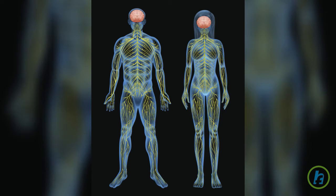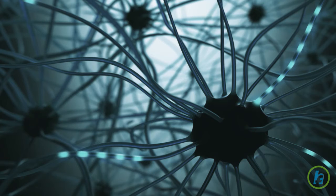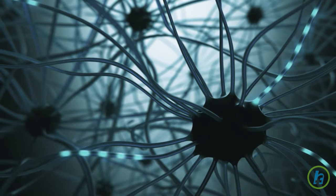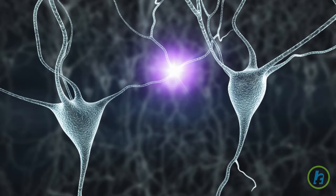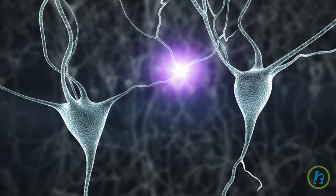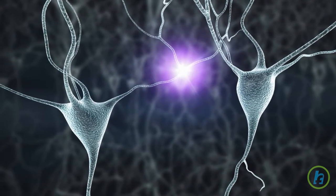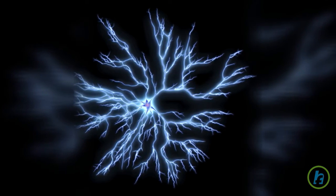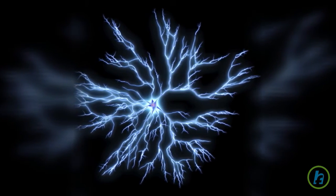The nervous system manages all of the body's actions and reactions in an environment. This is done through a series of electrical impulses that pass between neurons and nerve cells going to and from the brain.